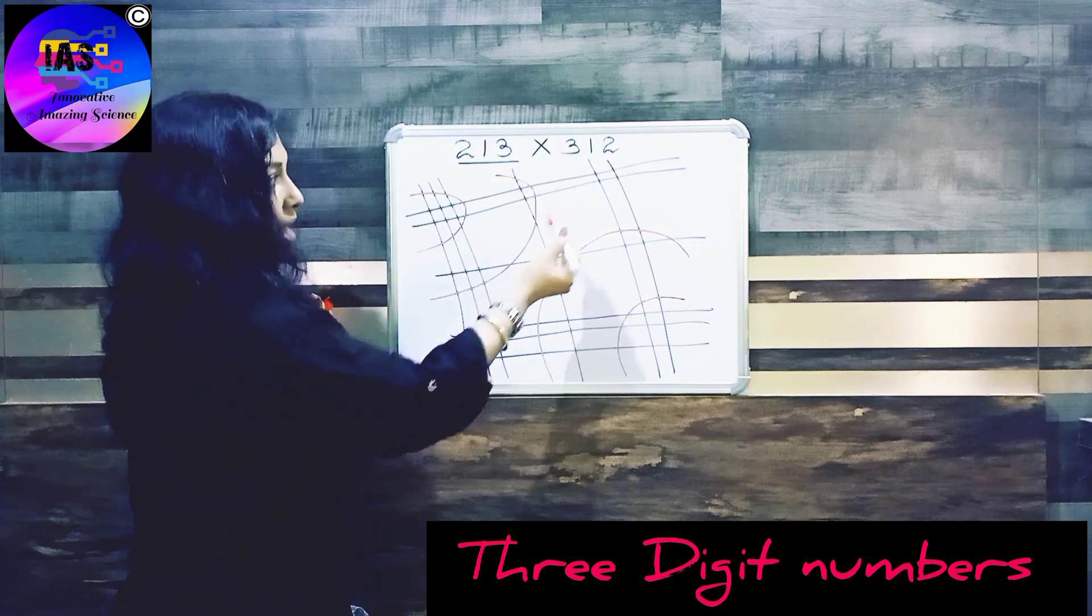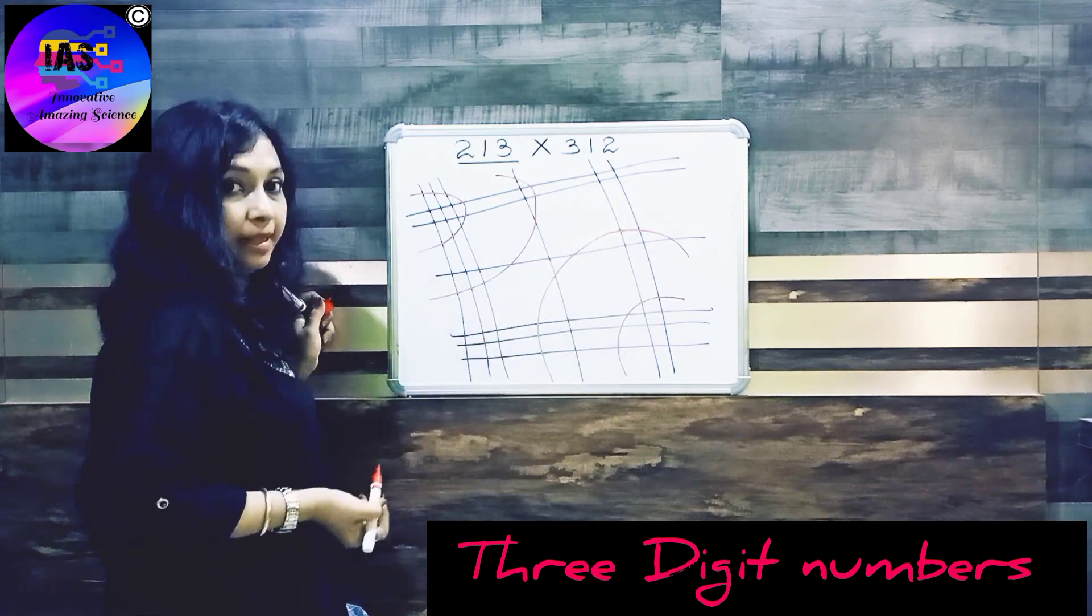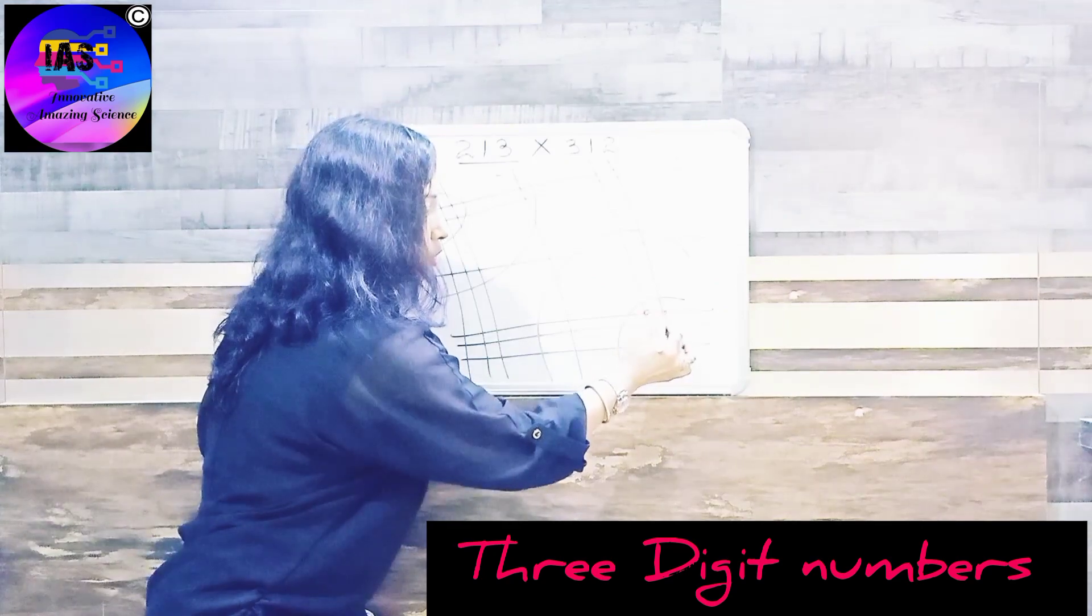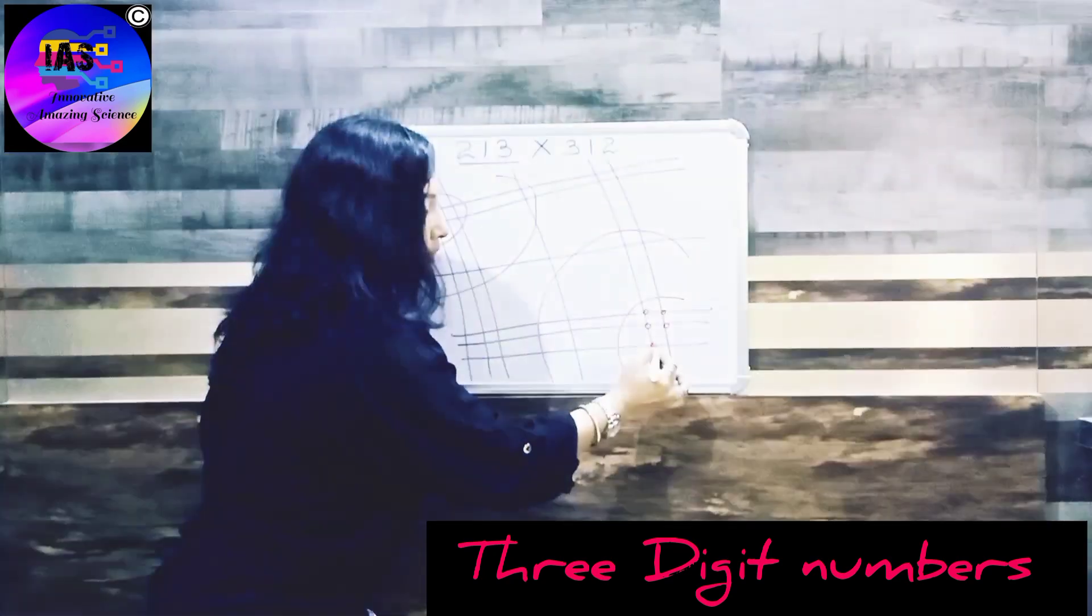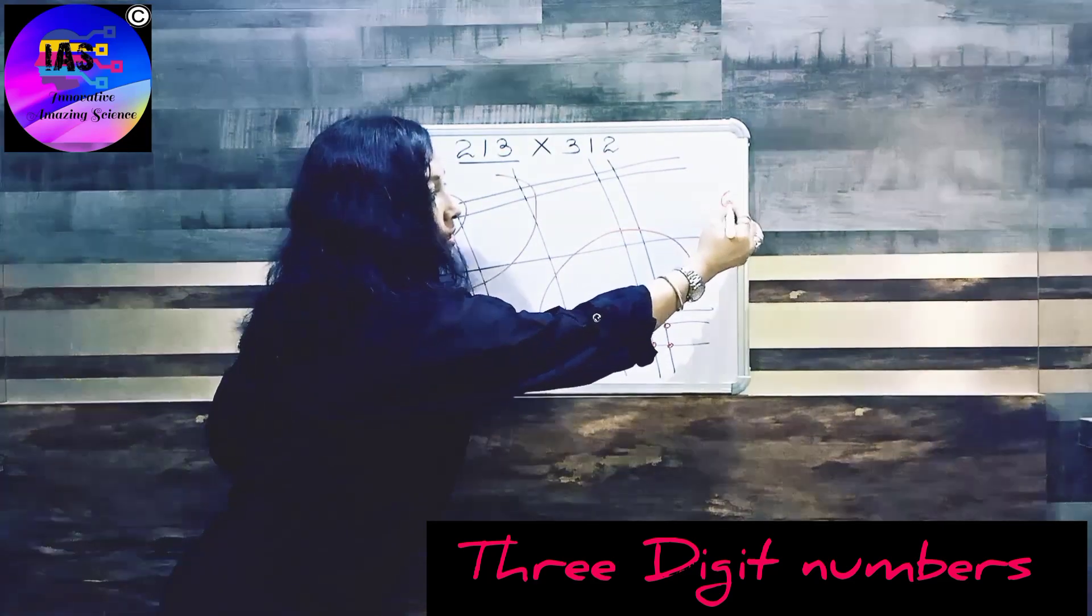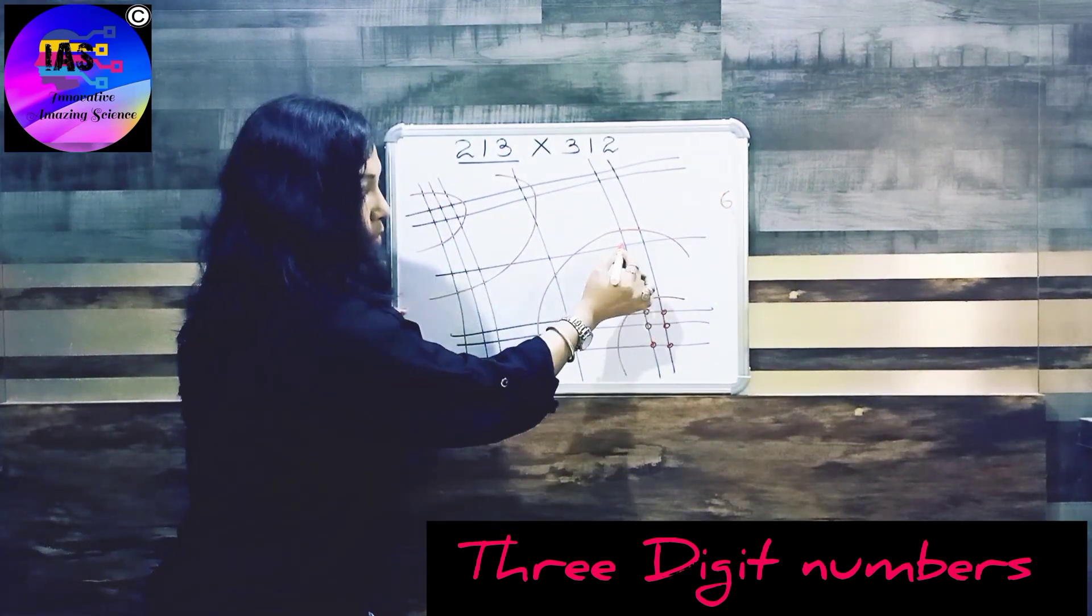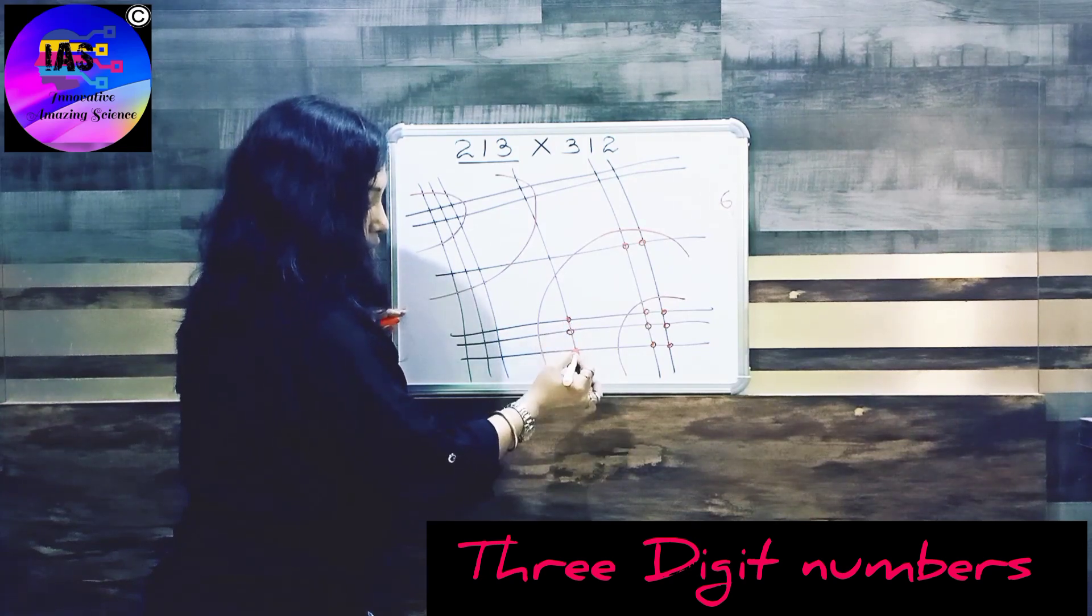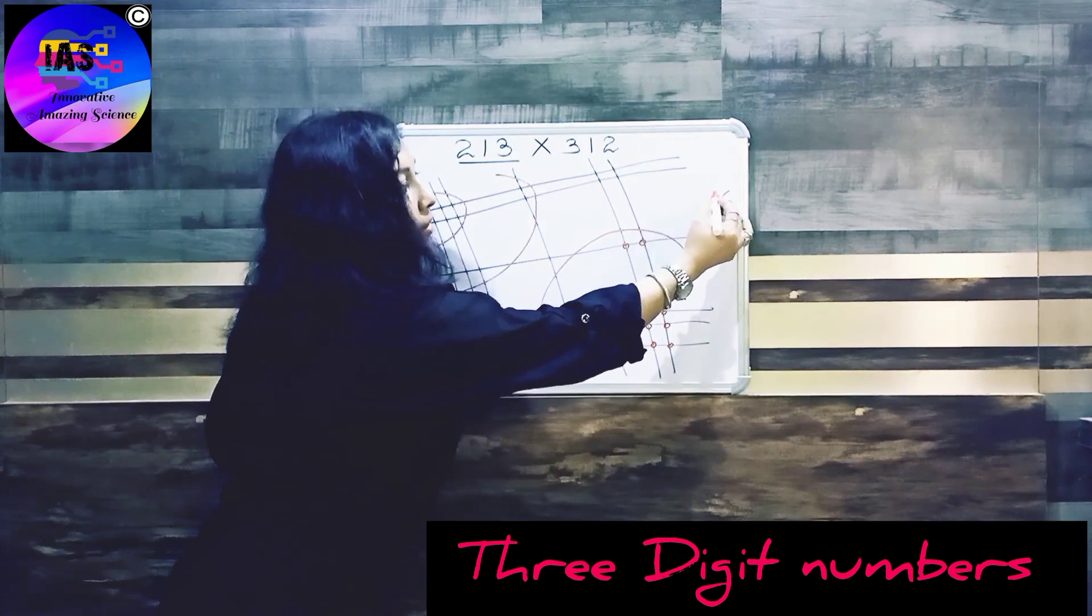So let's start to count: one, two, three, four, five, six. So our last number is 6. Next we have: one, two, three, four, five. I'll write 5 over here.